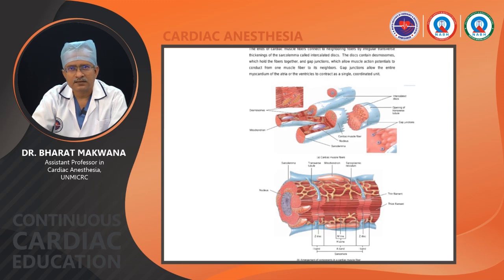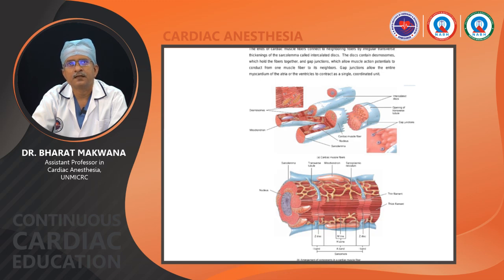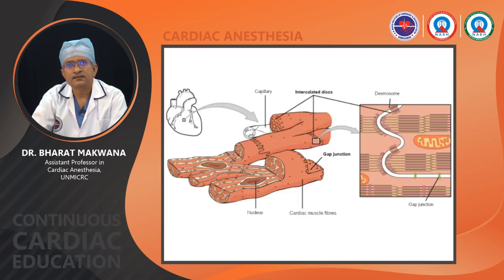The myocardium also has a sarcoplasmic reticulum that stores calcium, which is important for electromechanical coupling. When the myocardium gets depolarized by excitation, calcium released from the sarcoplasmic reticulum enters the cell, an actin-myosin bond forms, shortening of the myocyte occurs, and contraction is produced. This slide shows the gap junction and desmosome and their role in the structural integrity of the myocardium.